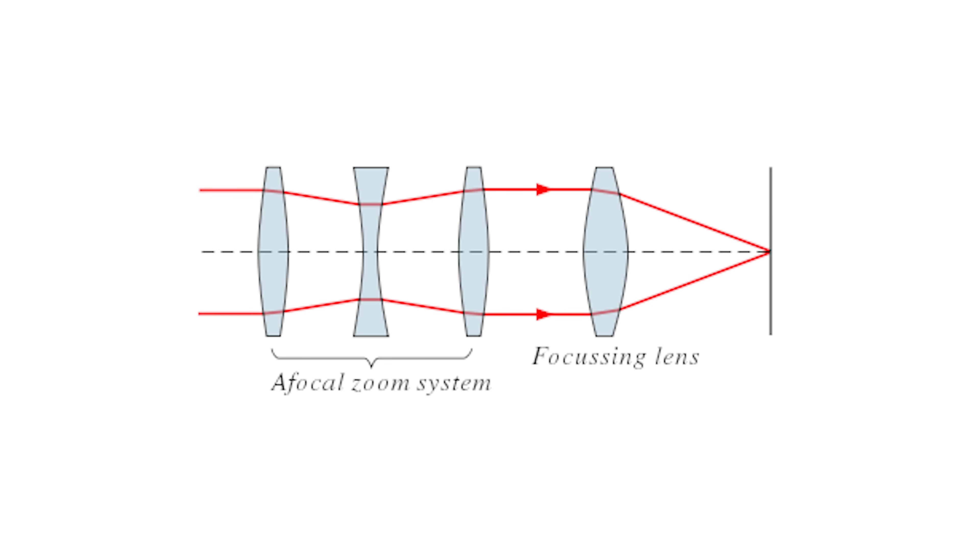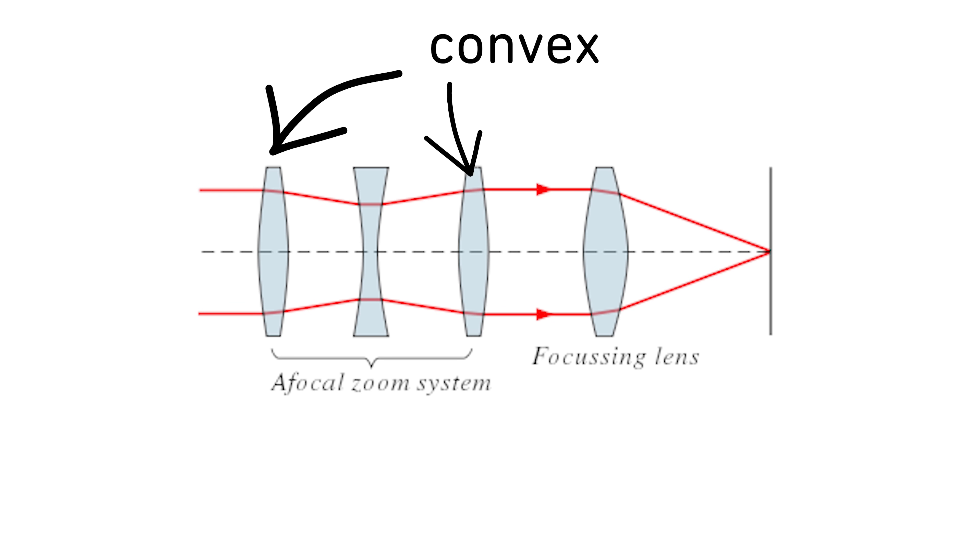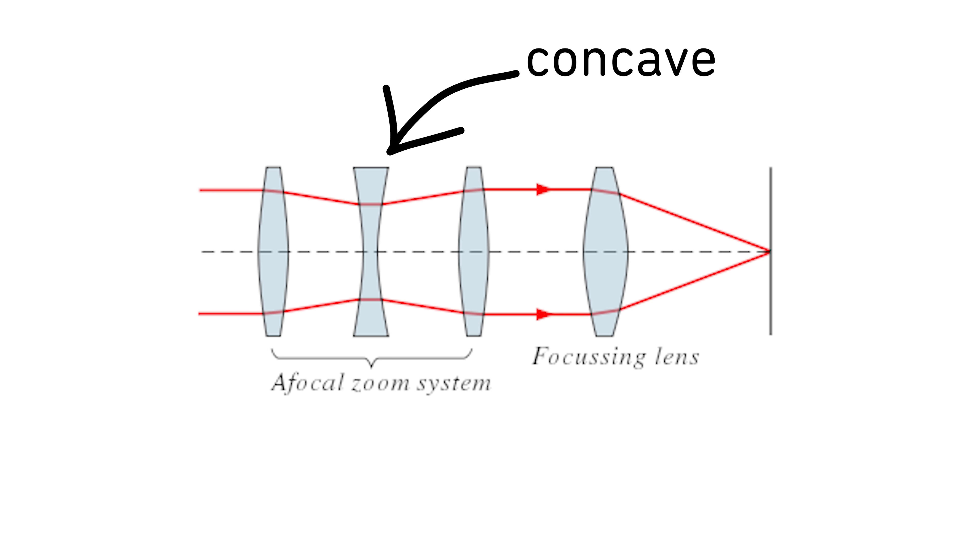Some lenses actually stick out when you do that — not this one though. This one moves an afocal zoom system, which is a few convex lenses that bend light inward with a concave lens between them that bends light outward. So as the light from the object you want to magnify comes in, it gets focused and then re-spread out to make the image appear bigger on the image sensor. There are also lenses that don't zoom, called prime lenses. And if your phone can zoom in, it's not the same process — that's just the camera enlarging the digital image rather than actually bending the light to make an object appear closer.